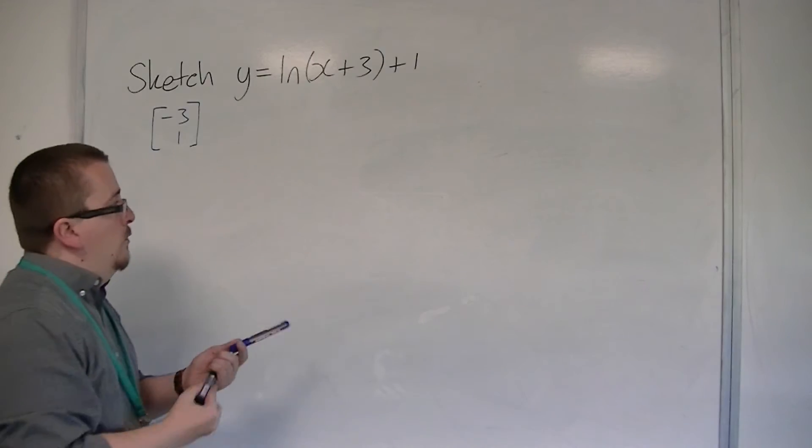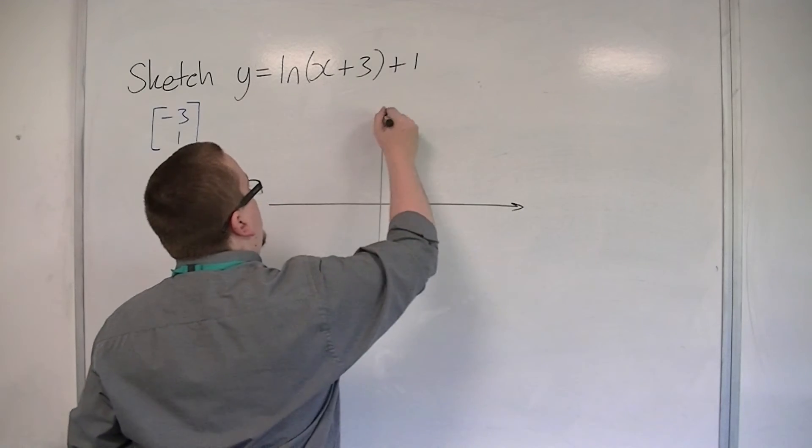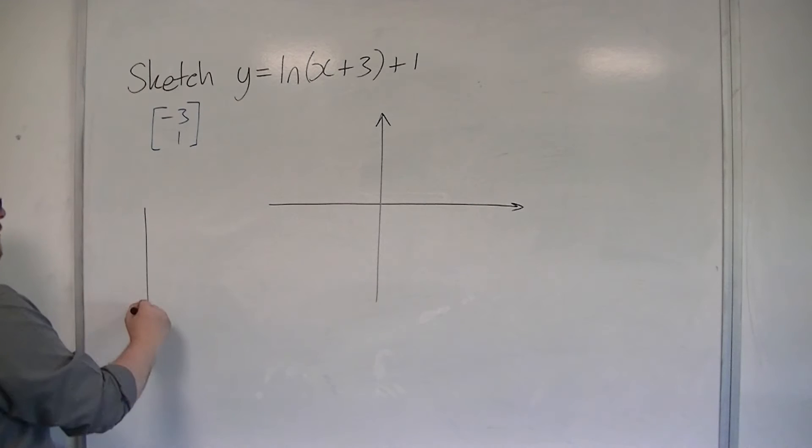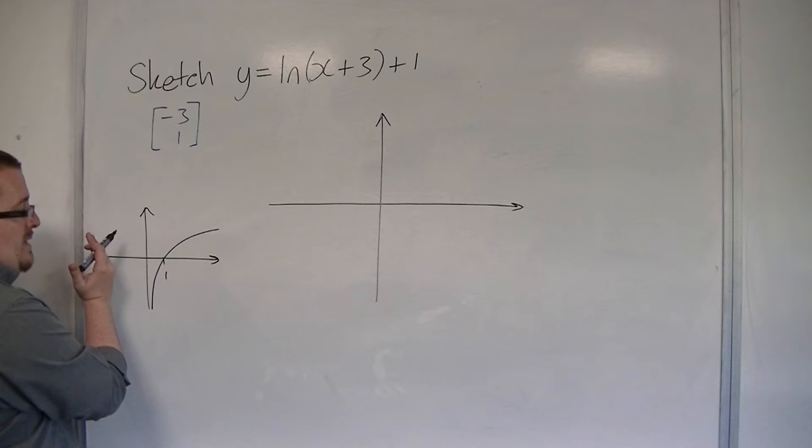And so the original y is equal to log of x curve, which looks like this, will be translated minus 3, so 3 to the left, and then 1 up.